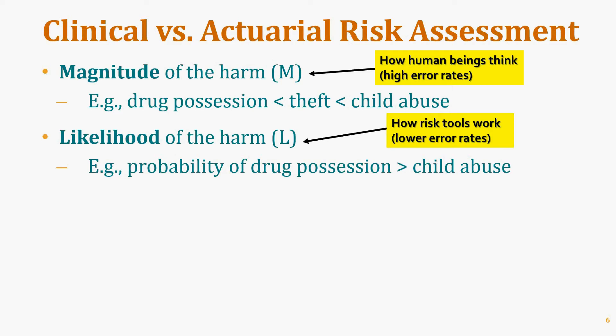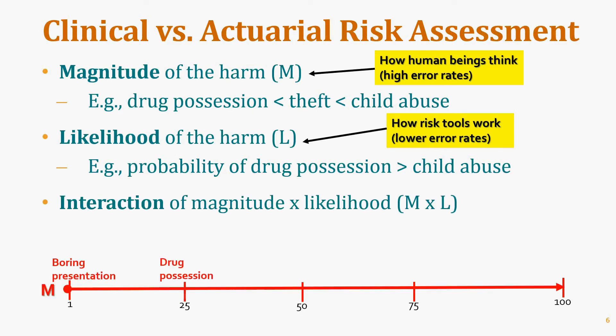Drug possession has a higher magnitude of harm because it creates an industry for drug dealers with effects on violence and other crimes. Theft has a higher magnitude still. Driving under the influence is higher because the likelihood of seriously injuring or killing someone is substantially higher. The highest harm would be child abuse. If the likelihood that a drug possession offender will reoffend is about 75%, while DUI reoffense is about 25%, the interaction of magnitude times likelihood reveals the true risk score.